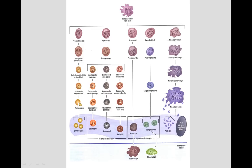So the promonocyte becomes a monocyte, which ultimately produces a macrophage. We also saw plasma cells in the chronic infection — B lymphocytes produce plasma cells, which secrete antibodies.